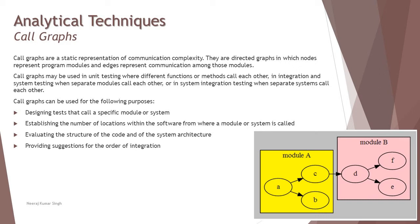Call graphs can be used for following purposes. Designing tests that call a specific module or system. Establishing the number of locations within the software from where a module or system is being called. Evaluating the structure of the code and the system architecture. Providing suggestions for the order of the integration. So just a template example here that if you see module A has A, B, C features and module B has D, F, E. And there is a calling structure being defined here. And this call graph can very well tell you how modules are calling each other. And that may be very well considered when you try testing them in order to meet the expectation of the application accordingly.